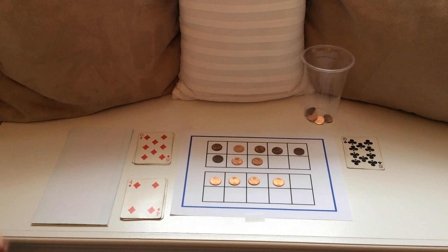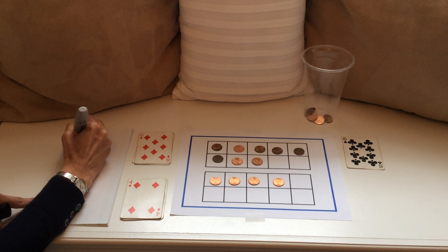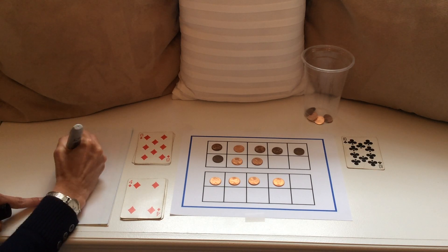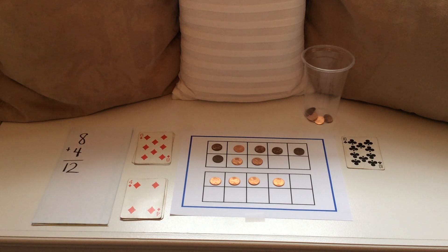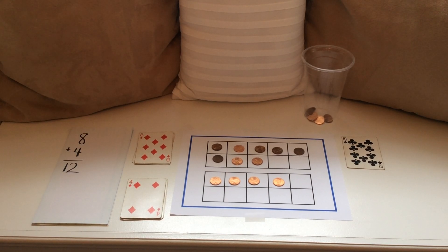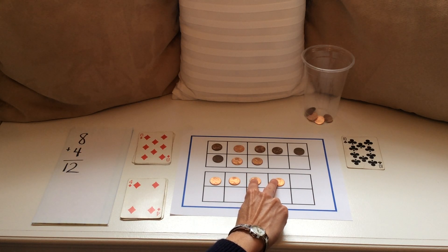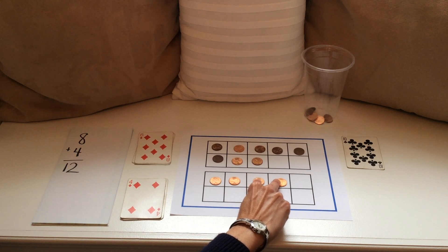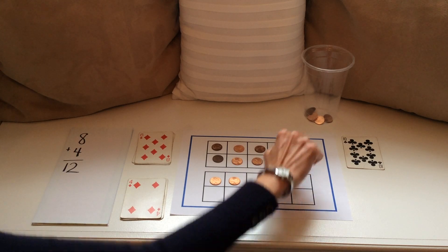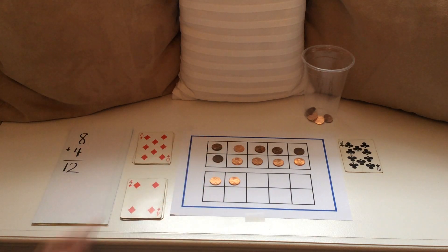I can write that as a vertical addition sentence using 8 plus 4 and the sum 12. Now let's use the friendly 10 strategy to help us solve 8 plus 4 quickly. I'll take these 2 counters and move them to the top 10 frame to make 10. I now see that the top 10 frame is filled in with 10 counters and the second part is left with 2.